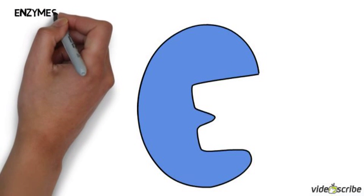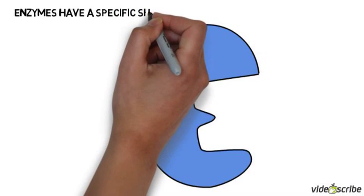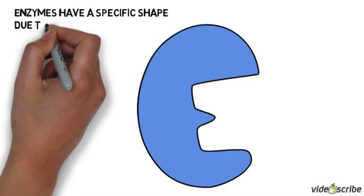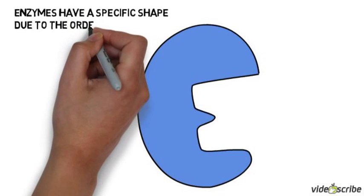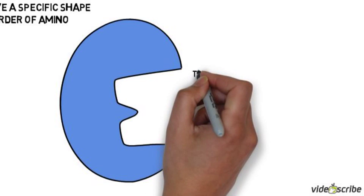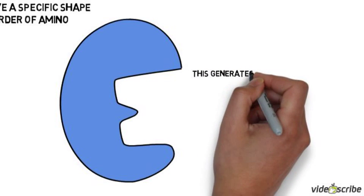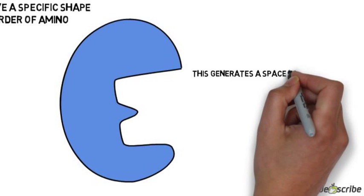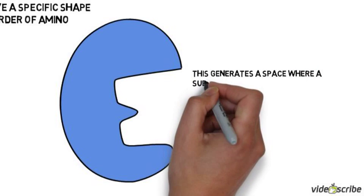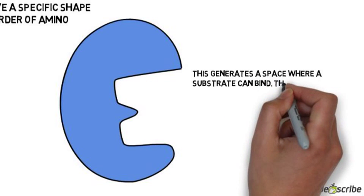An enzyme has a particular shape, and that is due to the amino acid sequence as we saw in the protein video, so they are folded in a particular way. Enzymes have a specific shape and part of this shape is something called an active site. The active site is the area where the substrate — the chemical or chemicals that are going to react together — combine.